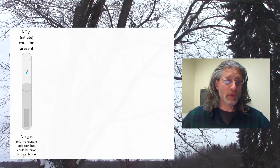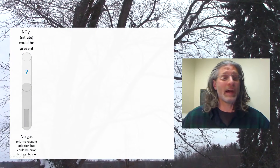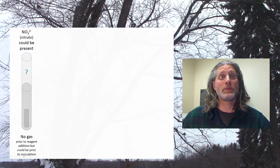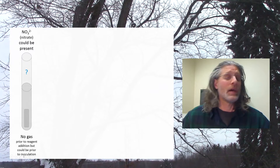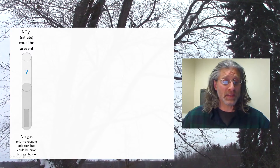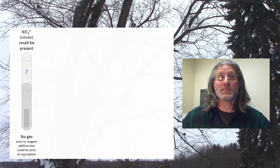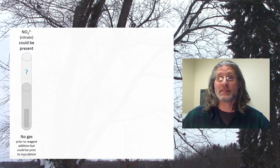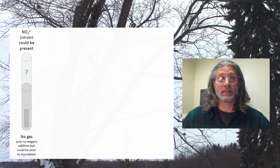The first tube shows either an un-inoculated tube or a tube in which an organism has grown. You can see that there is no color reaction at this point, and there is also no gas that has been collected.